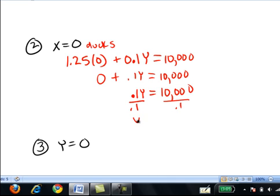Dividing both sides by 0.1, we have y equals 100,000. Again, x is the number of ducks. Y is the number of bracelets. So now we know if they make no ducks at the factory, that allows them to make 100,000 bracelets at the factory.